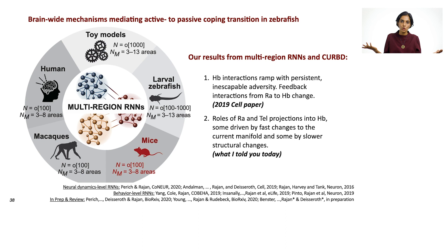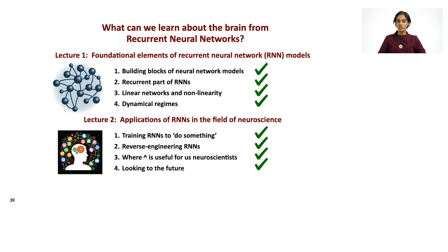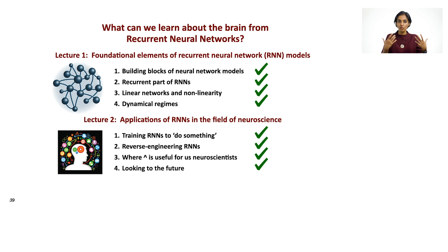When talking about looking at circuit mechanisms that are conserved as well as identifying where key divergences occur, we're currently taking this data-constrained RNN approach and trying to expand it to a variety of different nervous systems. In the first lecture, we saw the foundational elements of recurrent neural network models, the vocabulary, the properties of specific types of RNNs, and how we can get dynamically rich patterns of activity from them. In the second lecture, we saw how RNNs have been applied profitably for mechanistic discovery in neuroscience — looking at training algorithms and, through examples including an in-depth dive from my own lab, how reverse engineering recurrent neural network models may give us ideas about mechanisms that are inaccessible from experiments alone.